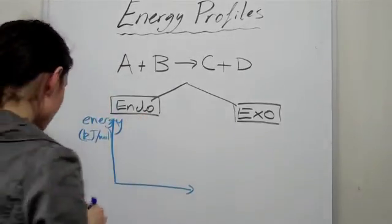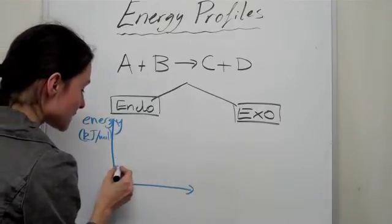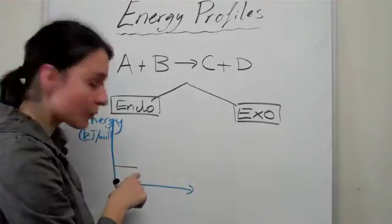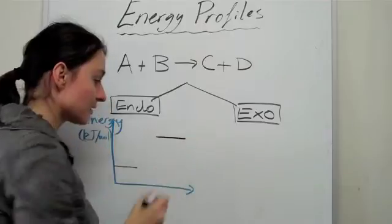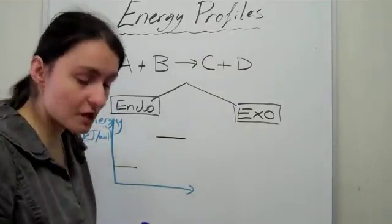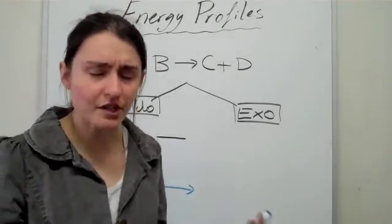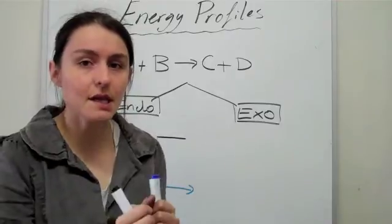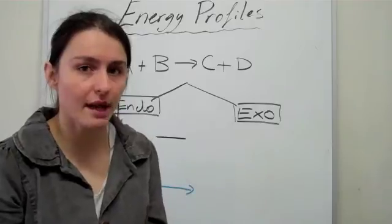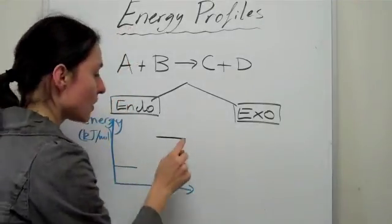An endothermic reaction is when you basically go from more stable things, so lower energy reactants to more unstable things. Think of it as being photosynthesis. In photosynthesis, you're taking carbon dioxide and water, both of which are very stable, and you're basically creating sugar, which has more energy in it than carbon dioxide and water ever do. So you're going from a low energy to a higher energy.